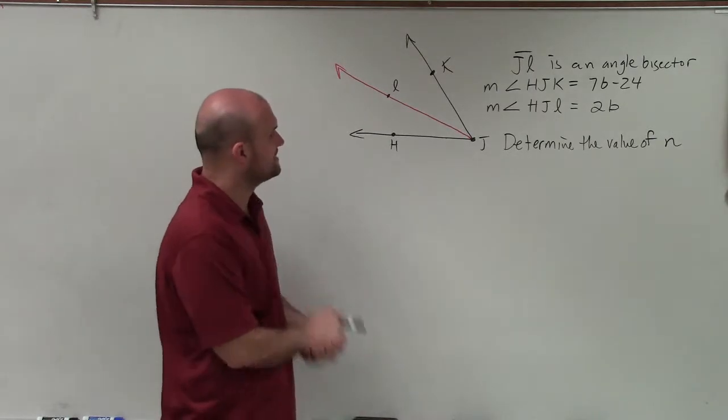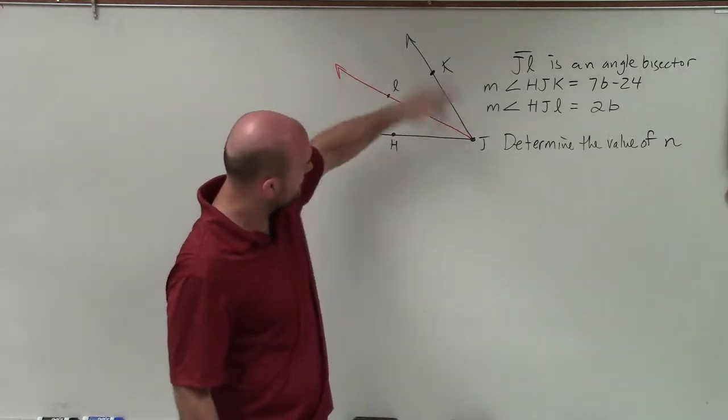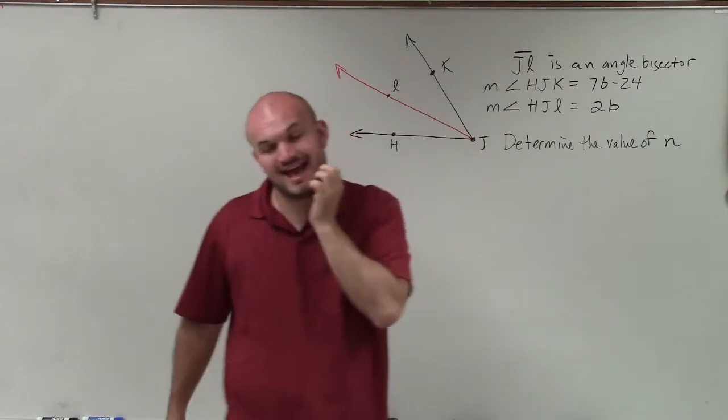Welcome. In this problem, again, I'm given the same angle. So I have this large angle, and I'm provided an angle bisector, which we label JL.